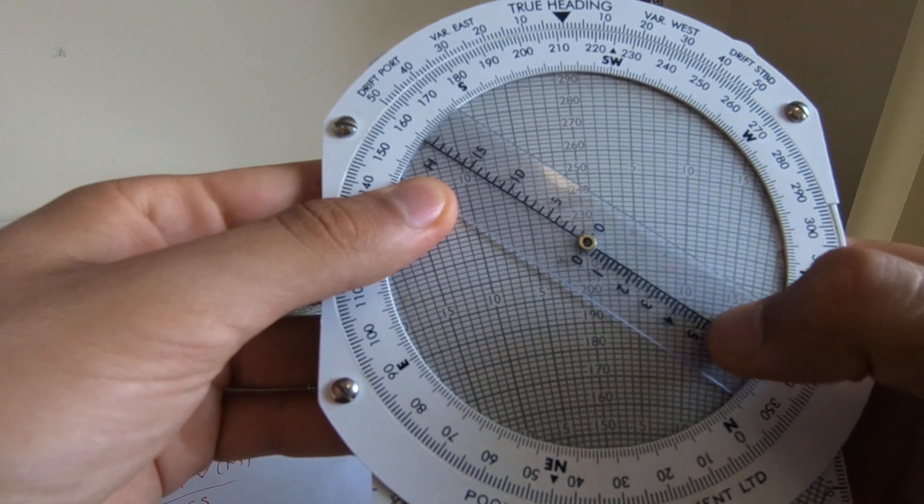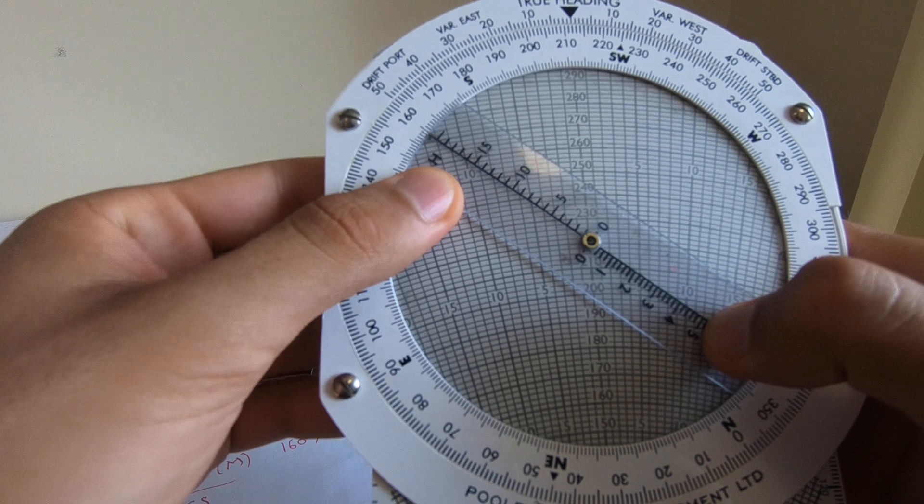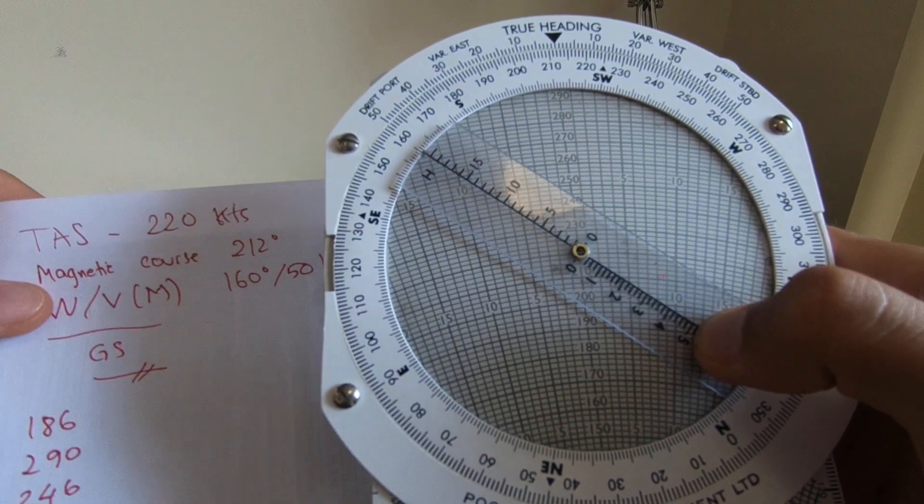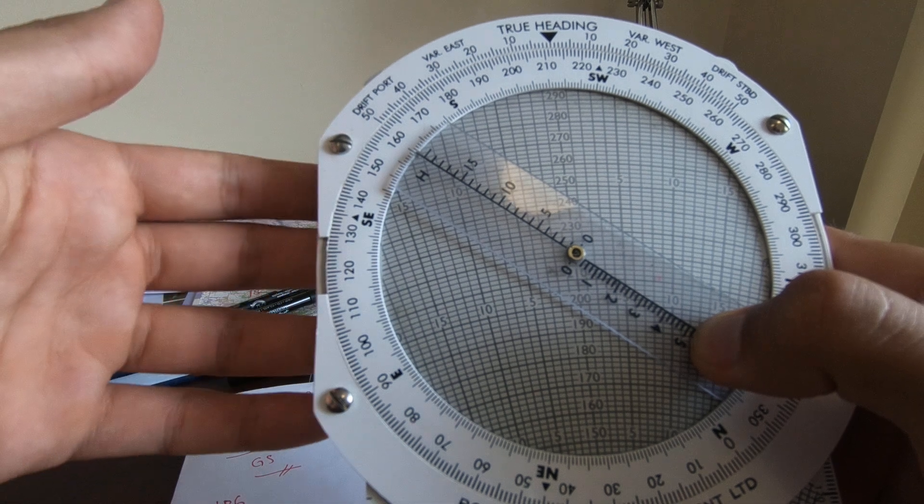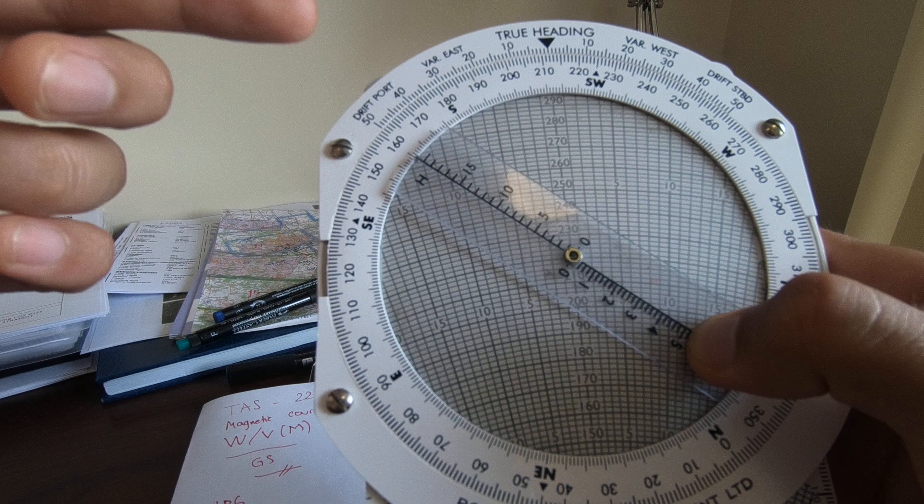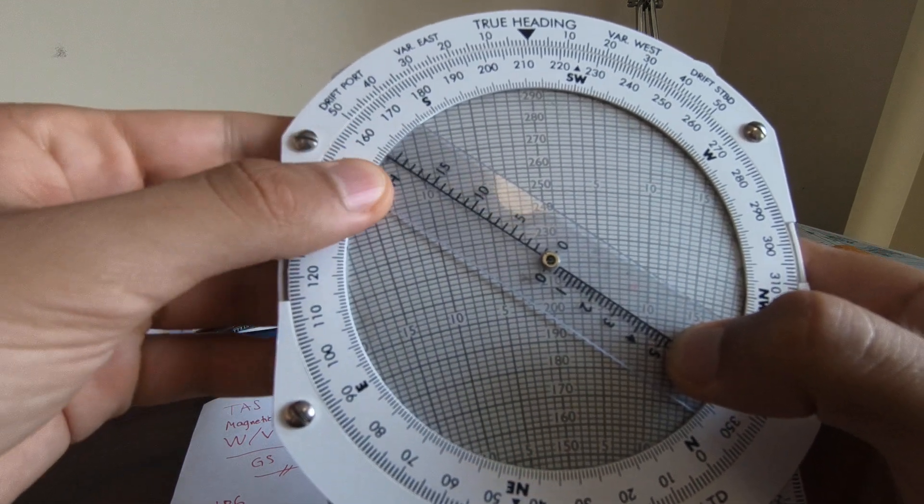And then most of the people would say, oh okay, 194. They will say 194, and this is why it's wrong, because most of the people they do not correct the heading for the drift. So basically we have a 12 degree drift to the right.